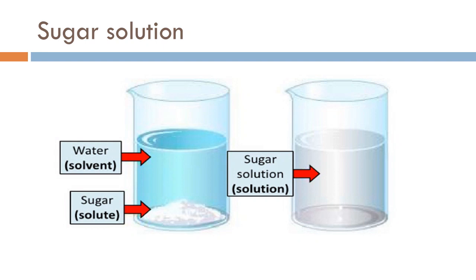If the solvent is a transparent liquid, the solution is also transparent and it passes through a filter paper. Water is a transparent solvent, so a sugar solution or a salt solution in water appears as a transparent solution that easily passes through a filter paper.